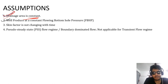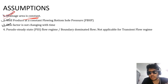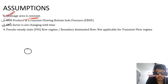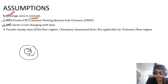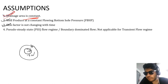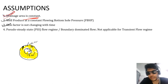Coming to the third point: the skin factor is not changing with time. It has been assumed that the skin will remain constant throughout the life of the well. Skin — let's say this is a wellbore radius rw. Near the wellbore radius there is a region of altered permeability, and because of that this particular phenomenon of skin occurs. Permeability can be more or less than the original permeability.